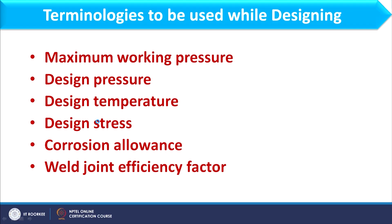Welcome to the fourth lecture of week 1. This lecture is based on terminologies used in pressure vessel design. We will first discuss how to select these terminologies or parameters, and then go for the detailed design of the pressure vessel. The main terminologies are: maximum working pressure, design pressure, design temperature, design stress, corrosion allowance, and weld joint efficiency factor.